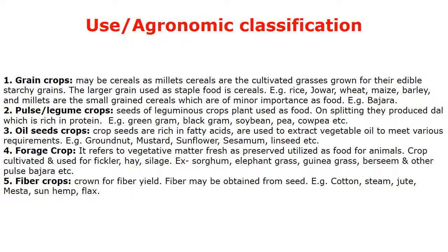Forage crops refer to vegetative matter, fresh or preserved, utilized as food for animals. Crops cultivated and used for fodder, hay, and silage include Sorghum, Elephant Grass, Guinea Grass, Berseem, other pulses, and Bajra.